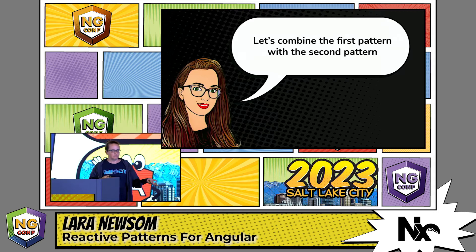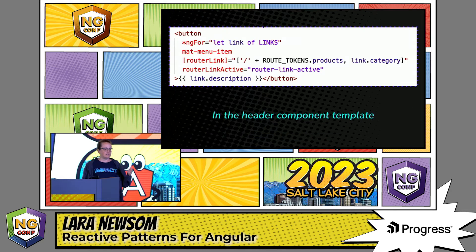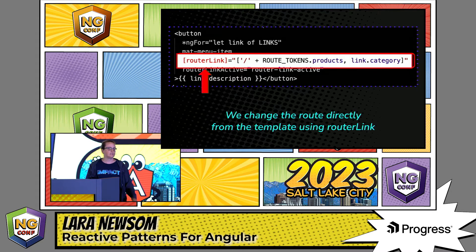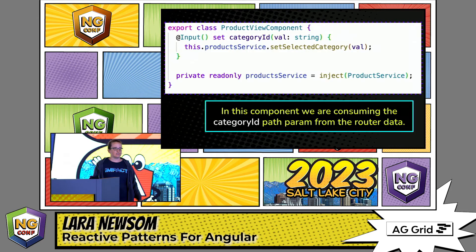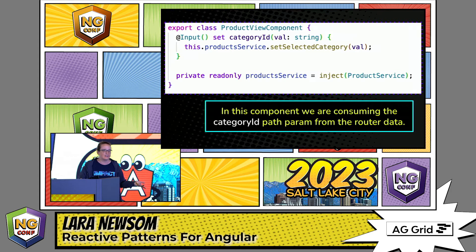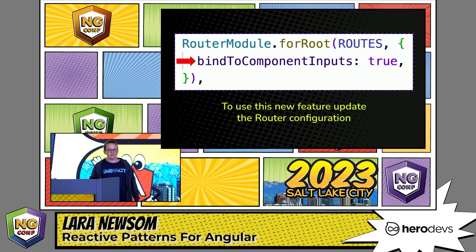Let's combine our first and second patterns. Users select a category from the header, in the header component template we use the router outlet to directly change the route. We pass a category ID — a path parameter, a dynamic value declared in our route. We consume it in the component property. As of version 16, we can consume all route params and resolver data in the inputs, and you can pair it with a setter. To take advantage of that feature, just set bindToComponentInputs to true in your router configuration.